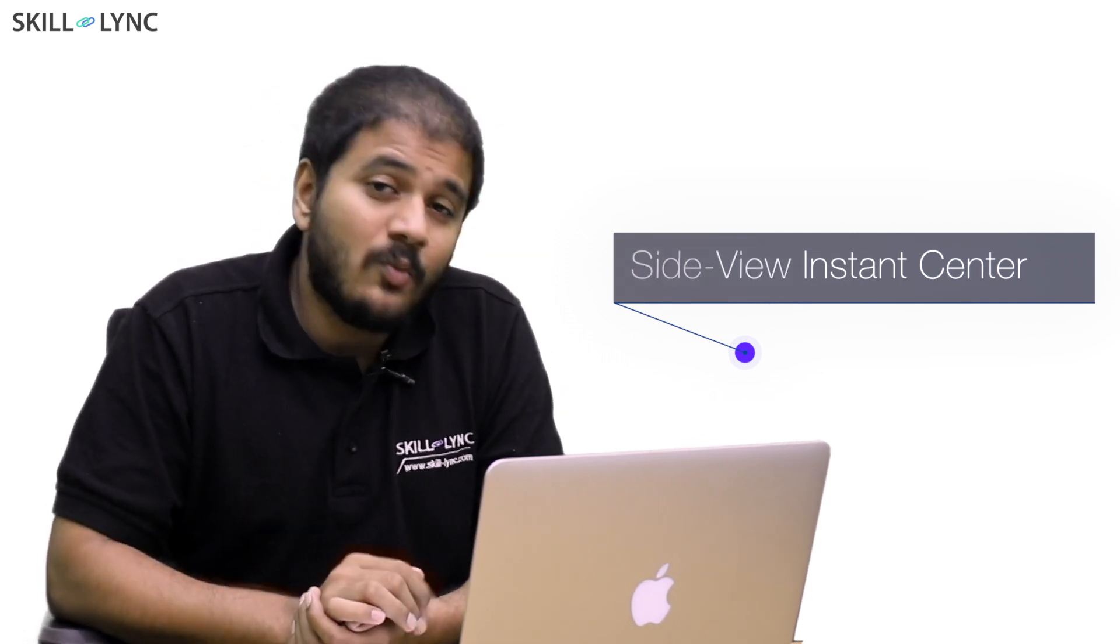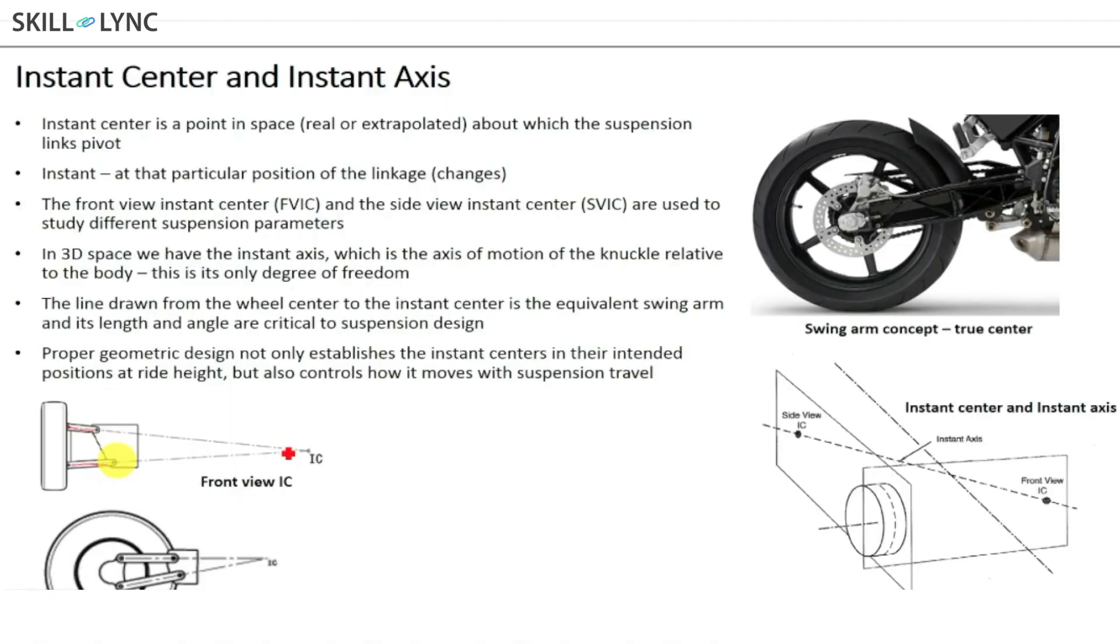Let me start by explaining what an instantaneous center is. Here in this example, you can see that there are two links that are mounted in their respective points.